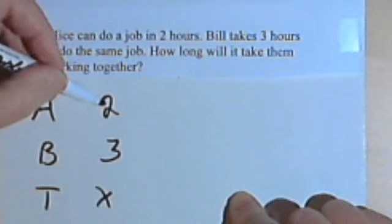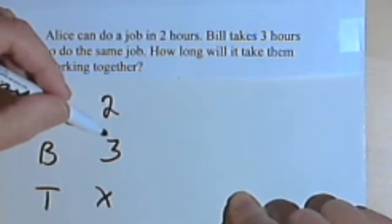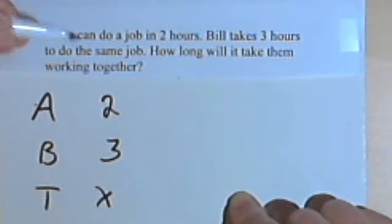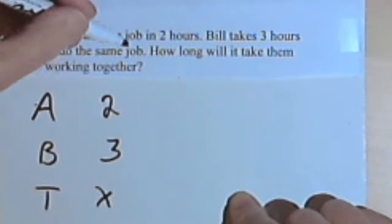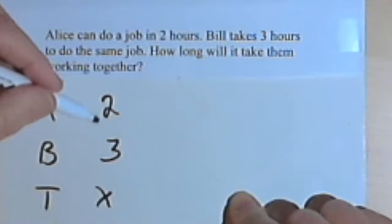Now at first you might figure all I have to do is add up their times. Two plus three would be five, so together they take five hours. But that doesn't make sense. If they're working together, they should take less time than either one takes individually.